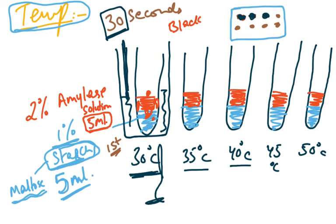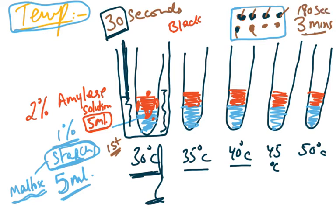We continue taking drops every 30 seconds: black at 30 seconds, black at 60, black at 90, black at 120, black at 150 seconds — and then at 180 seconds the colour remains brown. That means it took three minutes, or 180 seconds, for the entire starch to be hydrolysed.